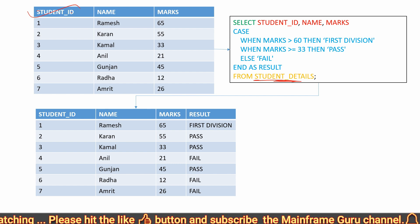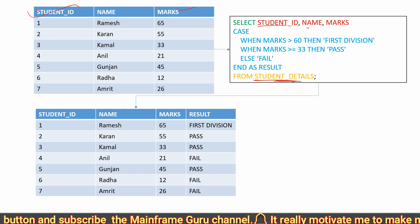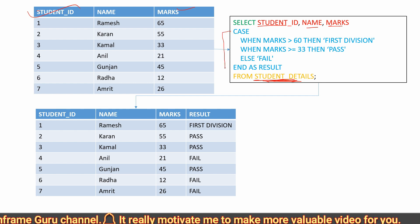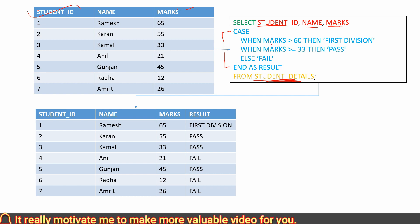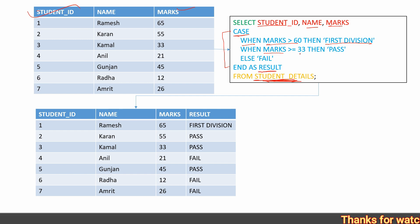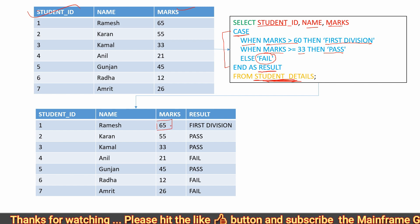For example, you have a student details table with student ID, name, and marks. We are fetching student ID, name, and marks from the student details table and using the CASE expression to print a result based on marks. If marks is greater than 60, it will print 'First Division'. If marks is greater than or equal to 33, it will print 'Pass'. Otherwise, you will get 'Fail'.